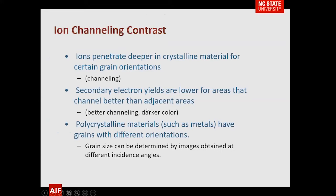If you look at polycrystalline materials such as metals, they have many different grains with many different orientations. Because of this, we can get an idea of the grain size just from looking at the FIB ions-in, secondary-electrons-out image.